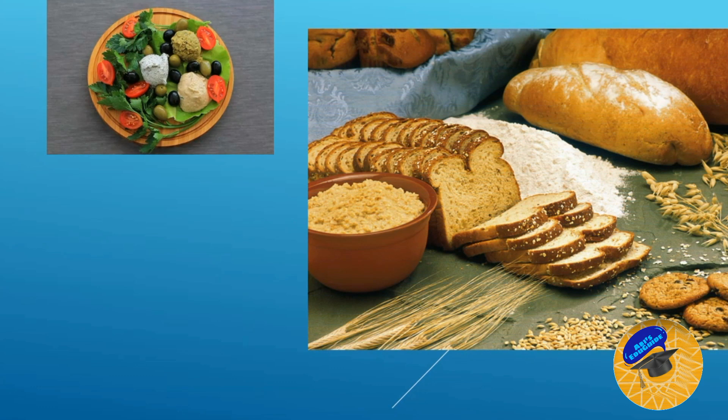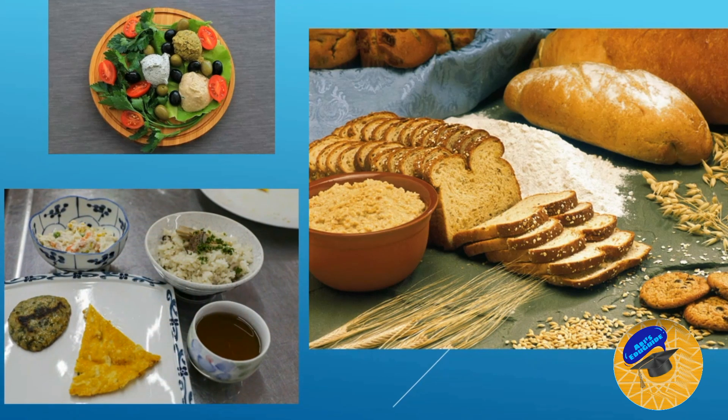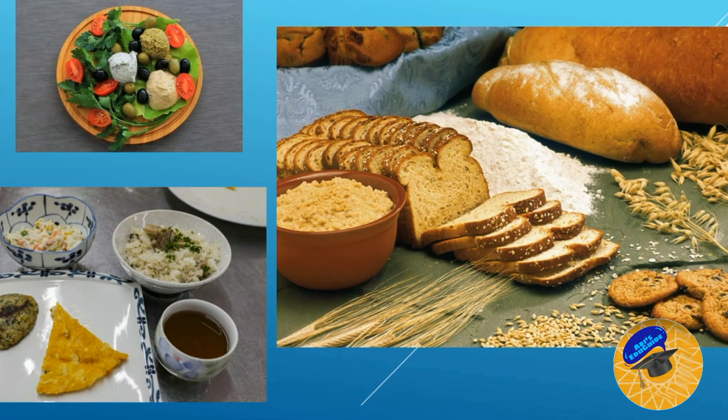Now you can get real food items from the kitchen and separate them as food from plants and food from animals.